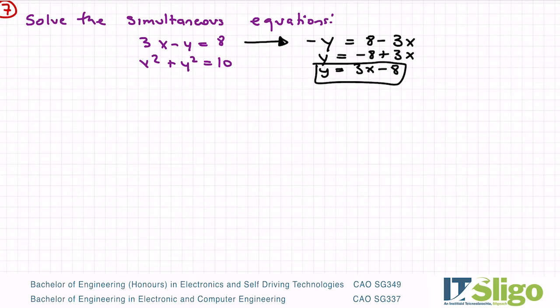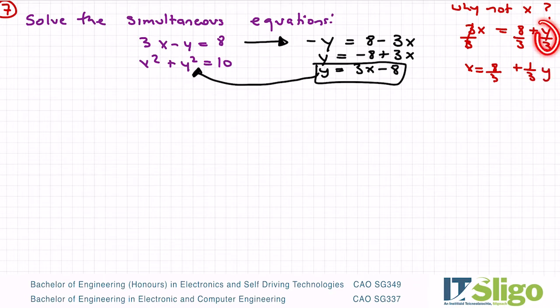So that's it in terms of y, and then I take that and substitute it in here where I have y in the other equation. Now why not x or why not in terms of x? Well let me show you why. I could have written it as 3x being equal to 8 plus y, then I have to divide across by 3, so x is equal to 8 thirds plus a third y. Now a third y, y over 3 is the same thing. Nothing unduly wrong with it, it's just working with fractions so of course it's going to be a bit harder.